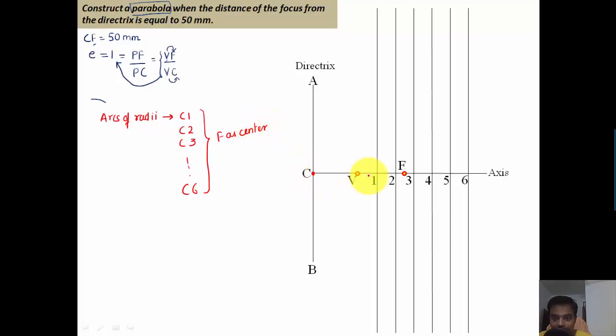What you need to do is keep one leg of your compass at C, other leg at 1, and with that much as the radius and with focus F as the center, place an arc above and below on this vertical line passing through 1 itself. Again, keep one leg at C, other leg at 2, and then with F as the center cut an arc above and an arc below.